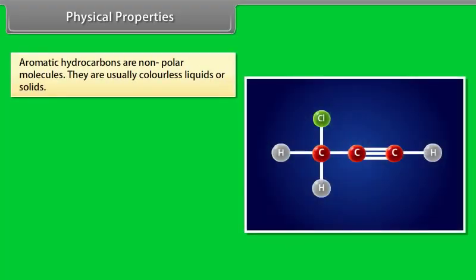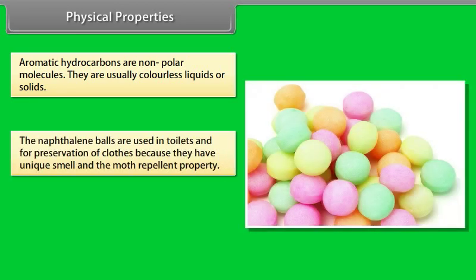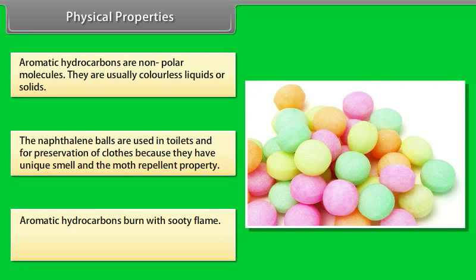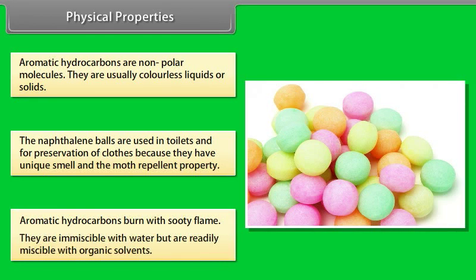Physical properties. Aromatic hydrocarbons are non-polar molecules. They are usually colorless liquids or solids. The naphthalene balls are used in toilets and for preservation of clothes because they have unique smell and the moth repellent property. Aromatic hydrocarbons burn with sooty flame. They are immiscible with water but are readily miscible with organic solvents.